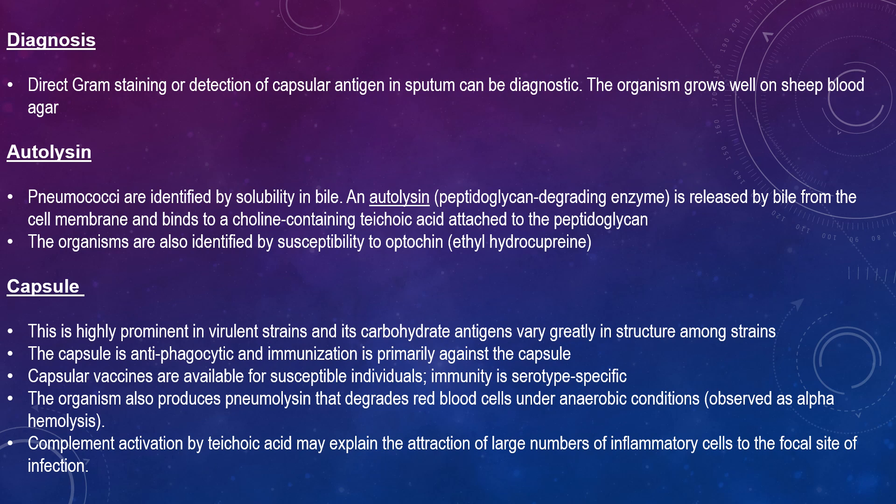Diagnosis involves direct Gram staining or detection of capsular antigen in sputum. The organism grows well on sheep blood agar. Pneumococci are identified by solubility in bile and autolysin, which is a peptidoglycan-degrading enzyme released by bile from the cell membrane. It binds to choline-containing teichoic acid, and the autolysin then digests the bacterial cell wall, resulting in lysis of the cell. If cells are grown in ethanolamine instead of choline, ethanolamine is incorporated into teichoic acid and the autolysin cannot lyse the cell wall. Understanding how autolysin works has led to the suggestion that antibiotics including penicillin work together with autolysin in killing pneumococci in vivo. These organisms are also identified by susceptibility to optochin, also known as ethylhydrocupreine.